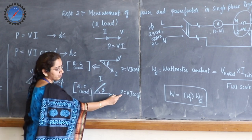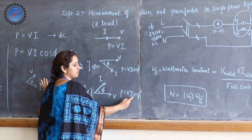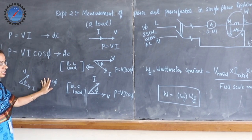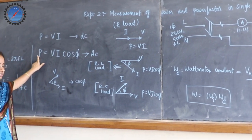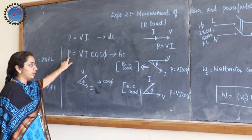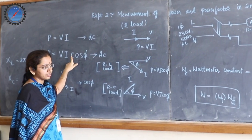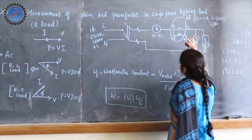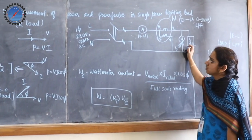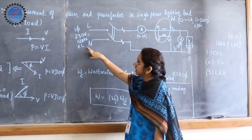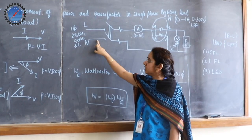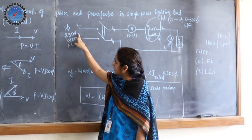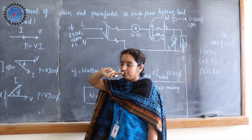Our objective is to measure the power consumed in the network and the power factor in the circuit. Let us consider a single-phase lighting network — a single-phase circuit energized by single-phase 230 volts, 50 Hz AC. This 50 Hz is the F term to be accommodated in the reactance formulas.